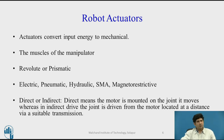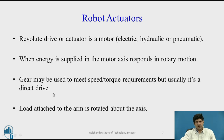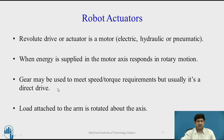Sometimes if the torque is sufficient, the motor may have a direct drive. There are pros and cons to both, and textbooks on robots discuss the advantages of using a direct drive and also of using gears for speed reduction. A revolute drive actuator is a motor typically — when energy is supplied, the motor axis responds in rotary motion. Gears may be used to meet speed and torque requirements, but in many cases a direct drive is preferred. The load attached to the arm is then rotated about its axis.